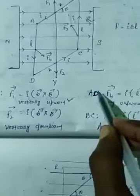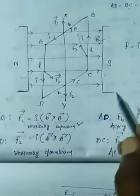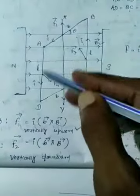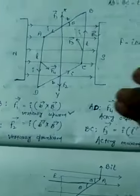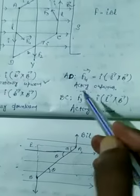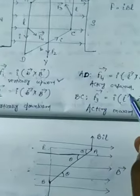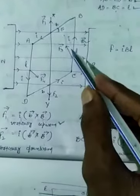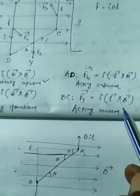Now, force upon AD: the direction of current, field, and force — the force is acting outward. So F4 equal to I into L cross B acting outward. Similarly, for BC, F3 equal to I into L cross B acting inward.